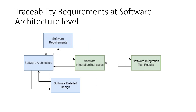At the software architecture level, software requirements act as the input. Software architecture is verified through software integration test specification or test cases, and the results are captured in software integration test results. We must ensure verification traceability here. The next level is software detail design — also called software unit design or low-level design. The input is software requirements, verification is via software integration test cases, and the output is software detail design.